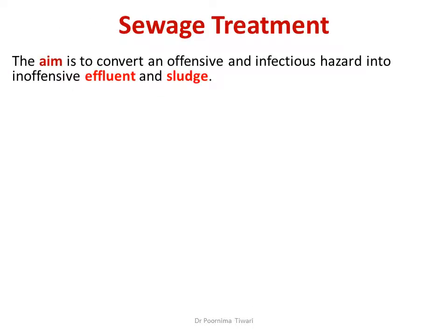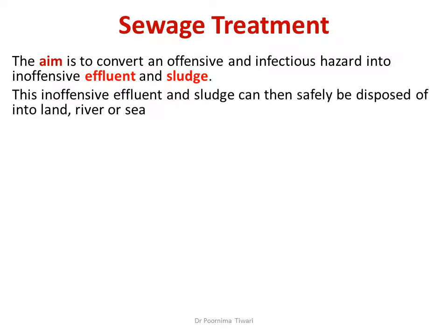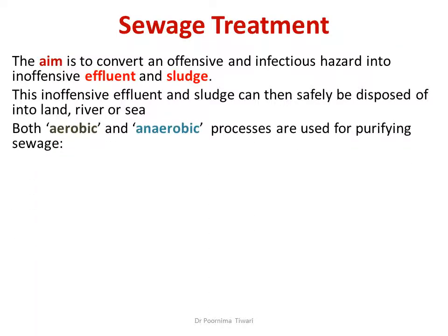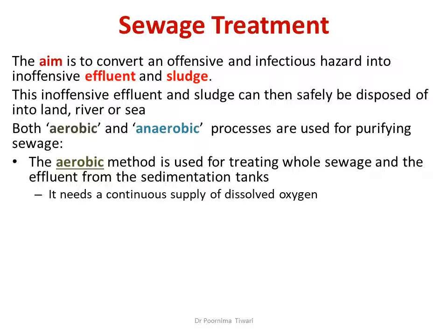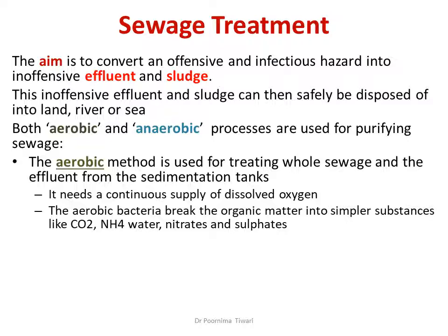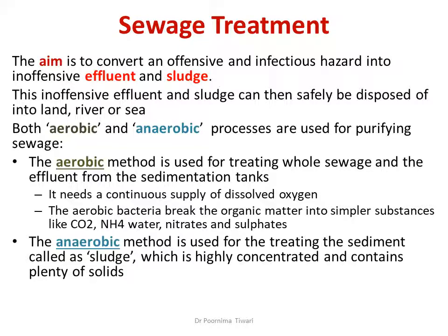The aim of sewage treatment is to convert offensive and infectious sewage into inoffensive effluent and sludge, which can then be safely disposed of into land, river, or sea. In the process of sewage treatment, both aerobic and anaerobic processes are involved. The aerobic method is used for treating the whole sewage and oxidizing it, requiring a continuous supply of dissolved oxygen. Aerobic bacteria break the organic matter into simpler substances like carbon dioxide, ammonia, water, nitrates, and sulfates.